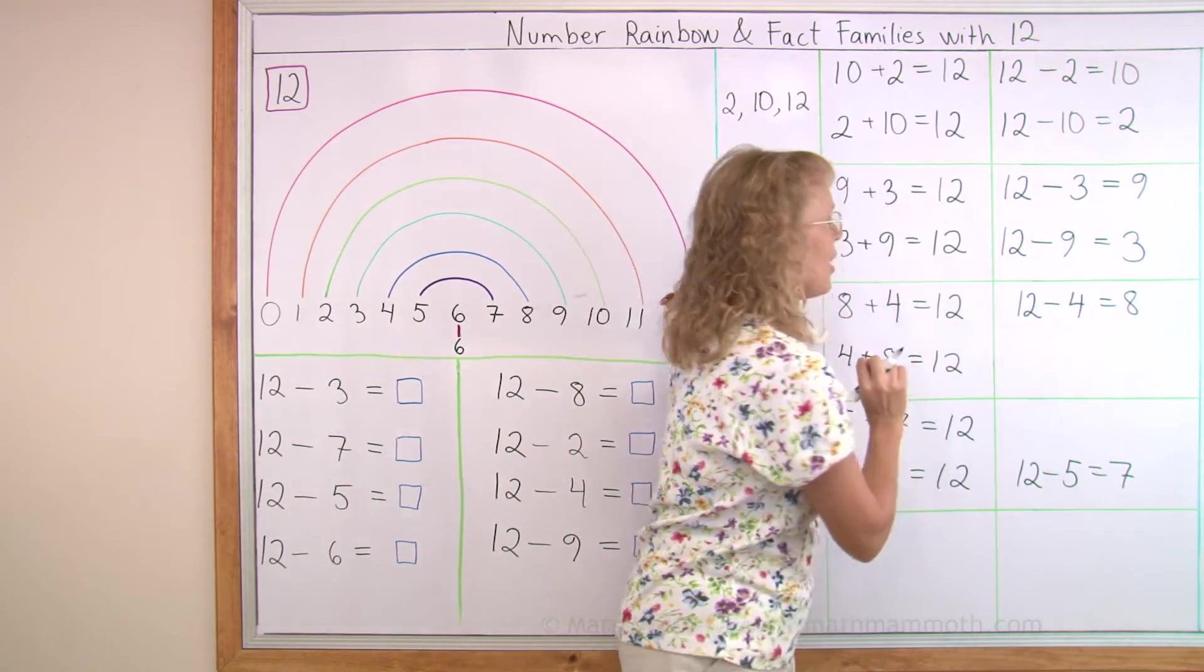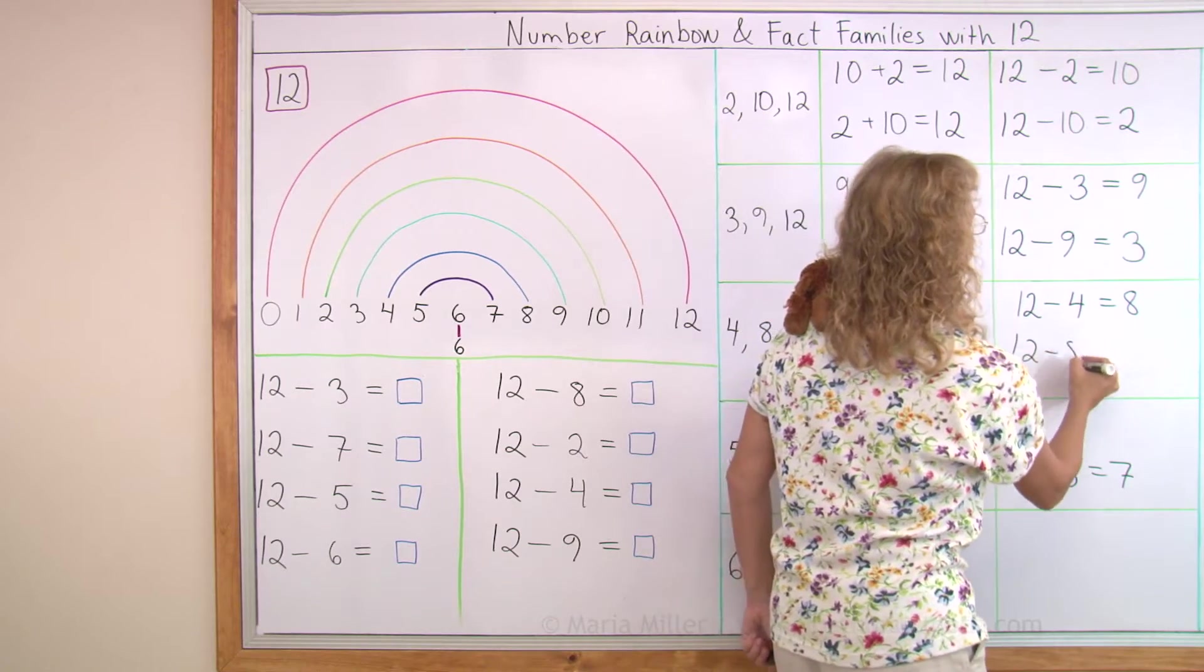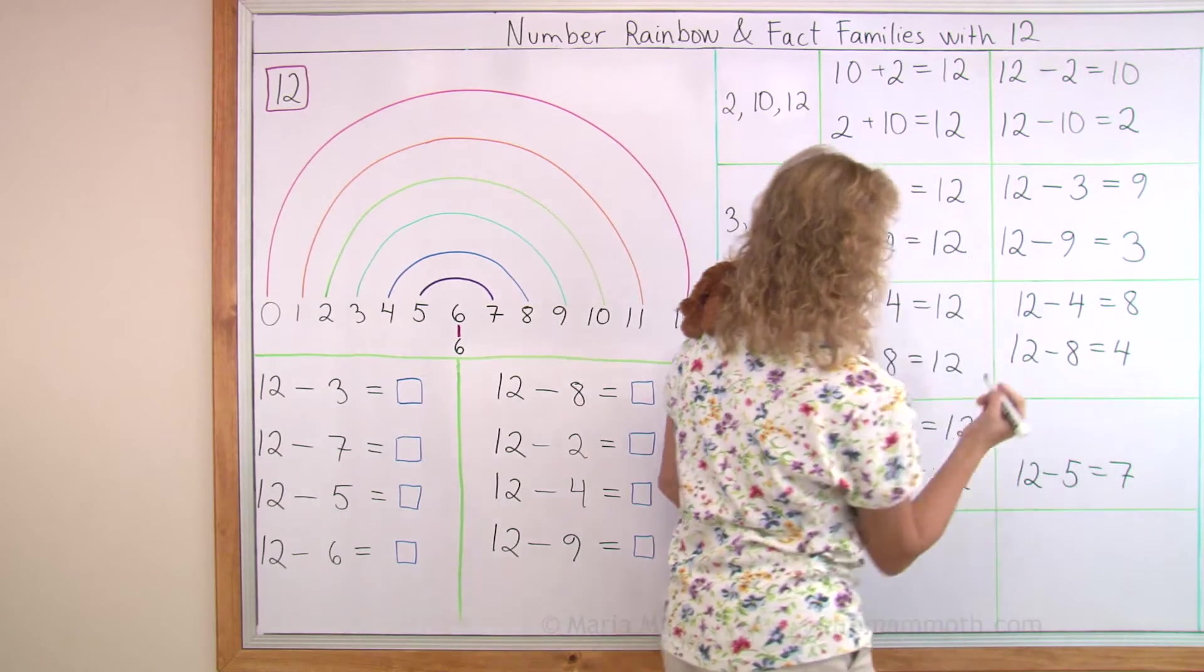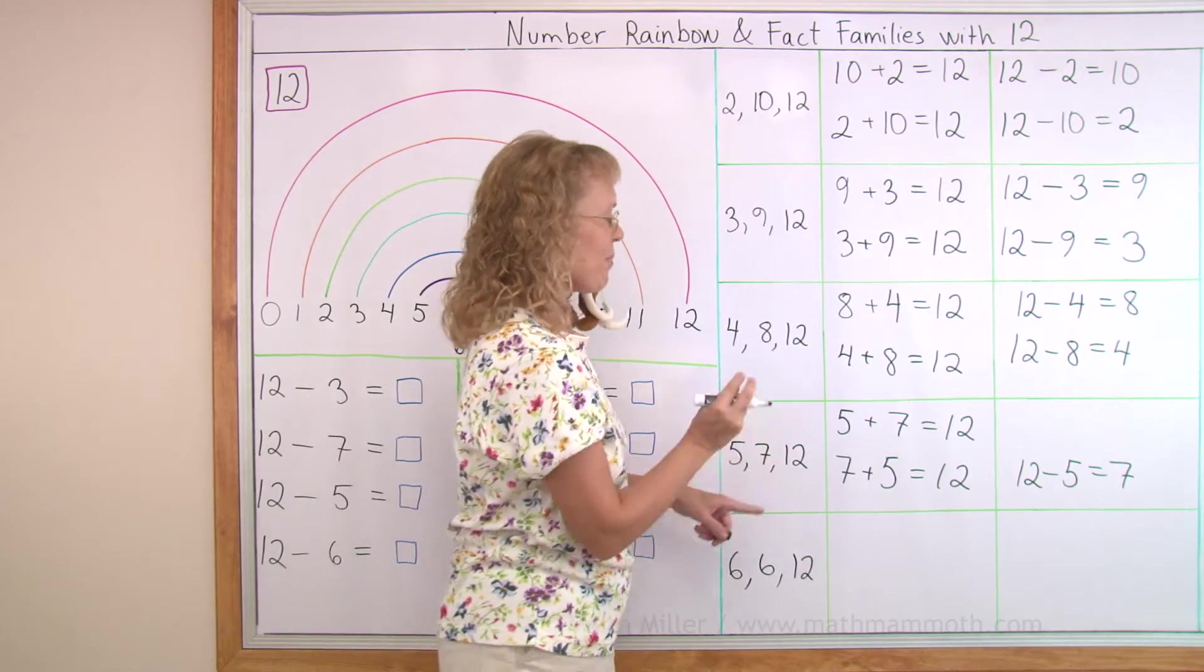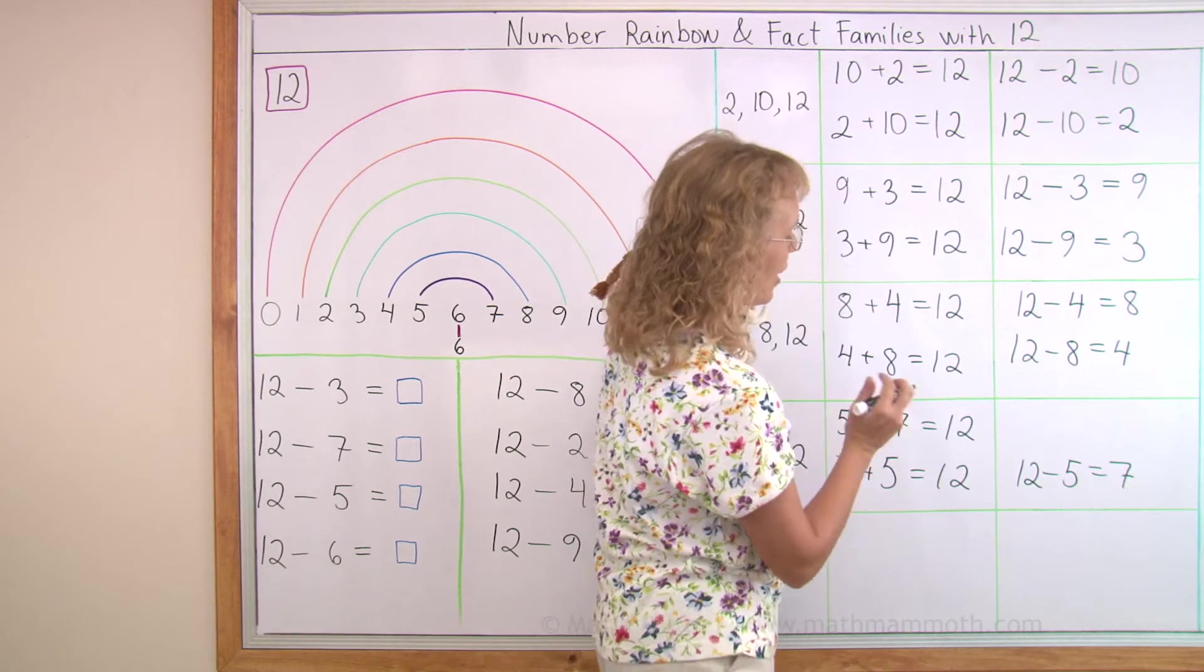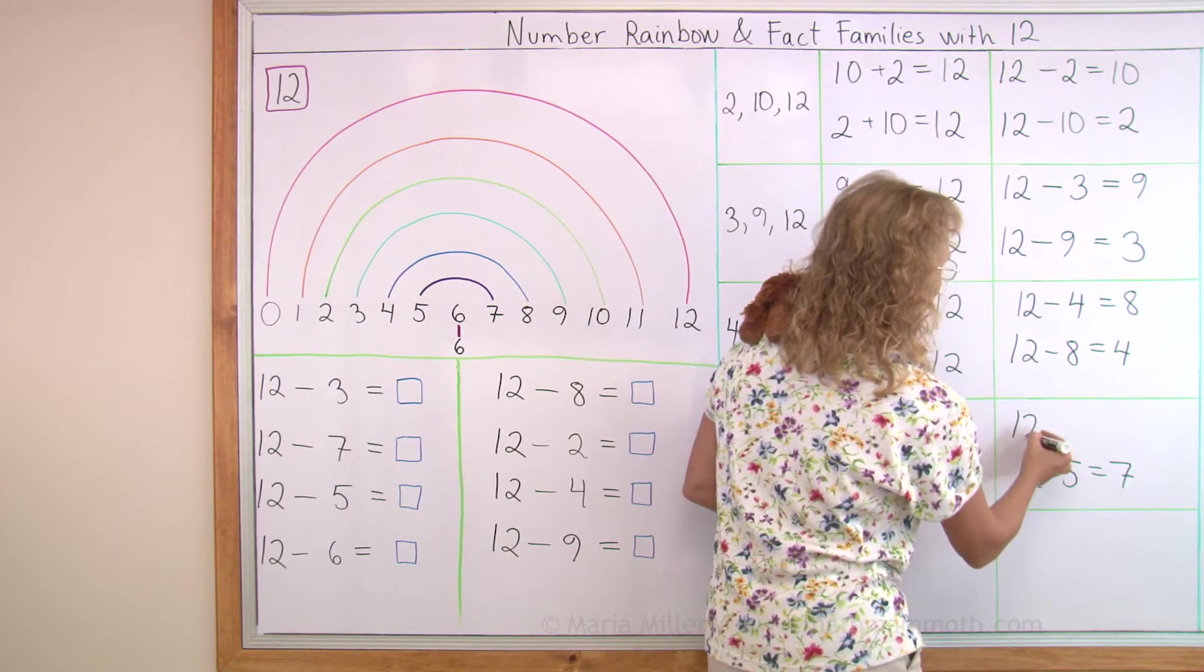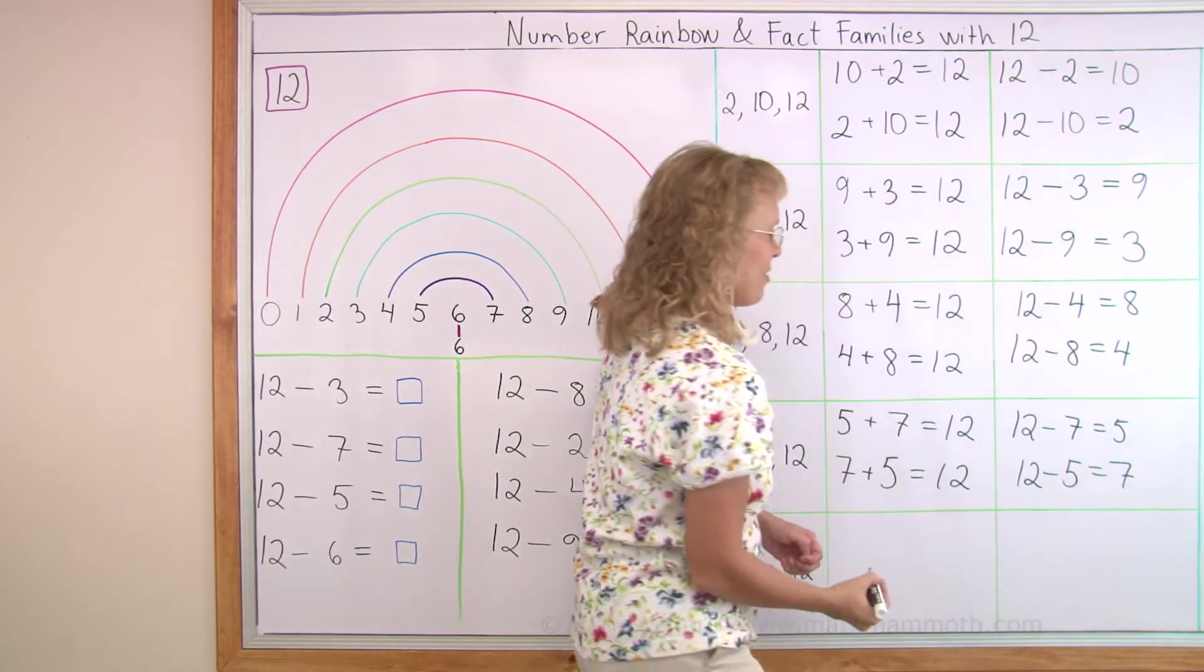And what subtraction is missing here? 12 take away 8 equals 4. Next one is 5 and 7. They make 12. Two additions and a subtraction is missing. That would be what? 12 minus 7 equals 5.